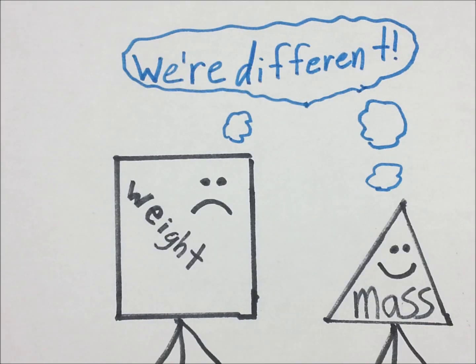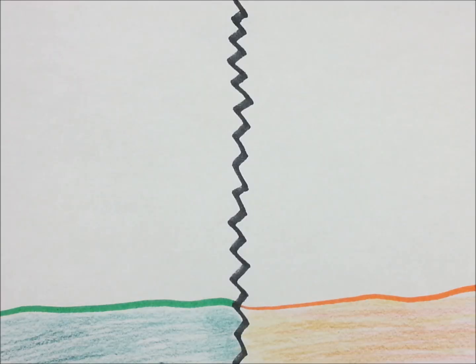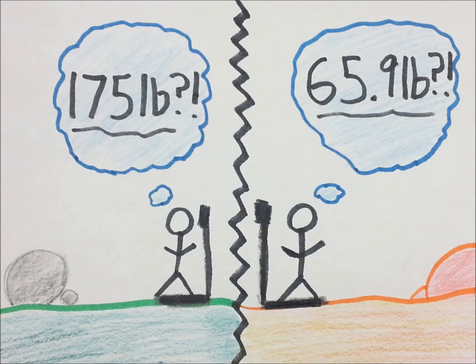Weight and mass are similar in some ways, but completely different in most. The main difference between the two is an object's weight can change if it moves from, let's say, Earth to Mars, but the mass doesn't change. Here's why.